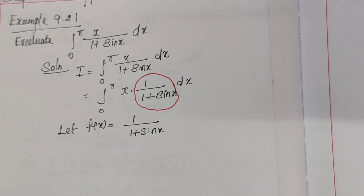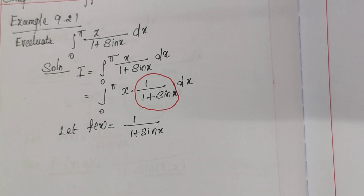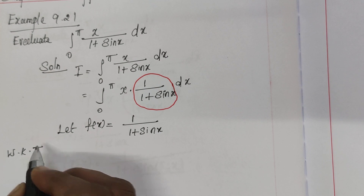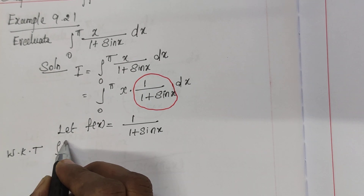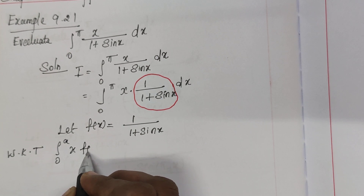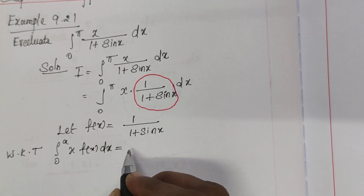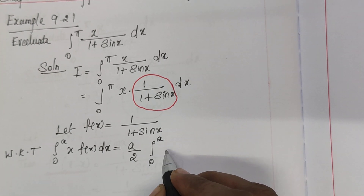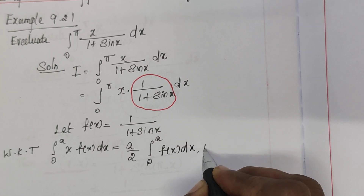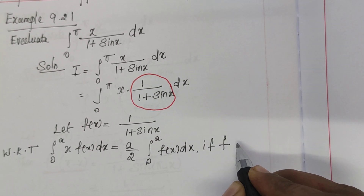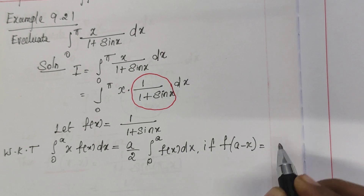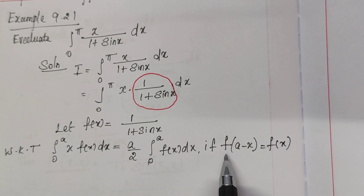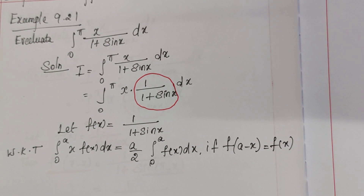So we know one property: the integral from 0 to a of x·f(x) dx is equal to (a/2) times the integral from 0 to a of f(x) dx. This property holds when f(a − x) = f(x).